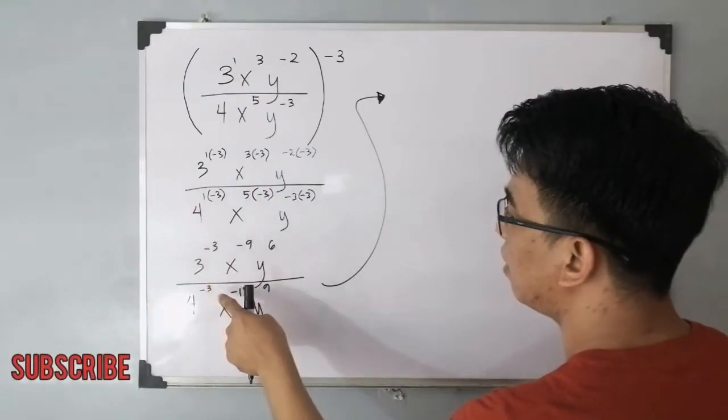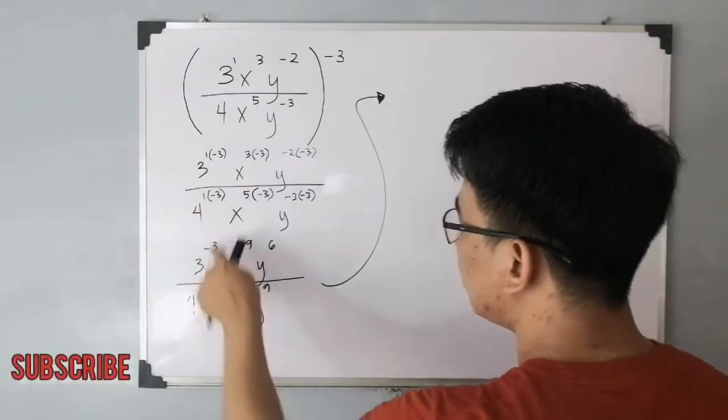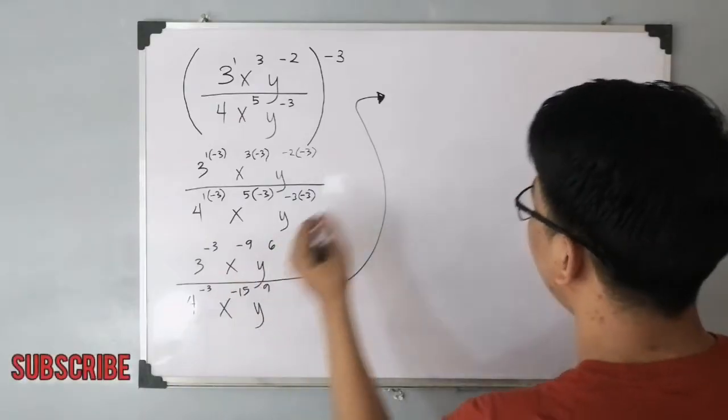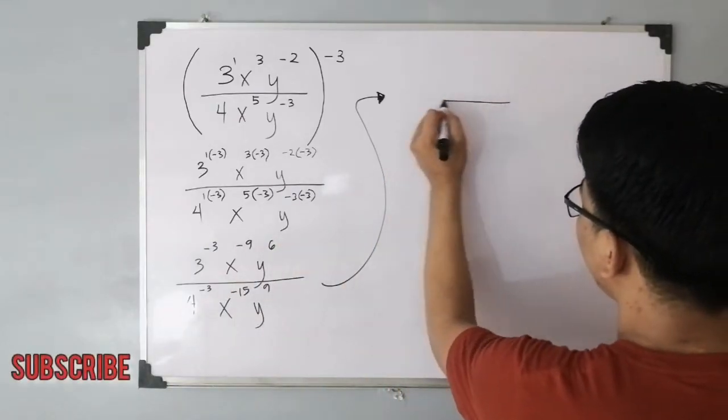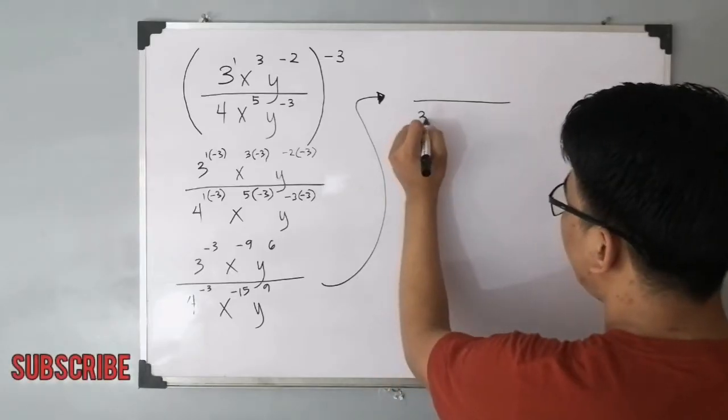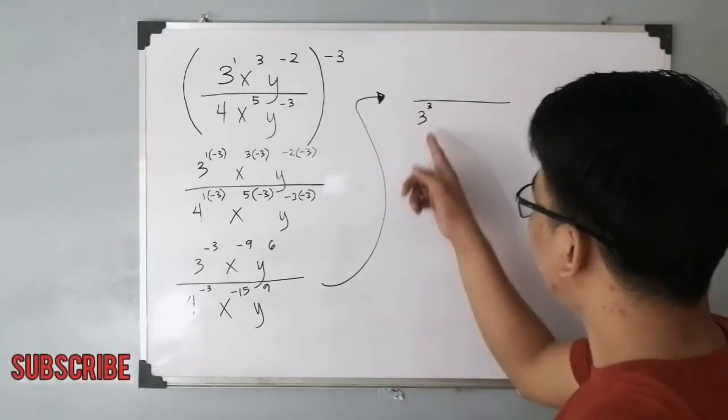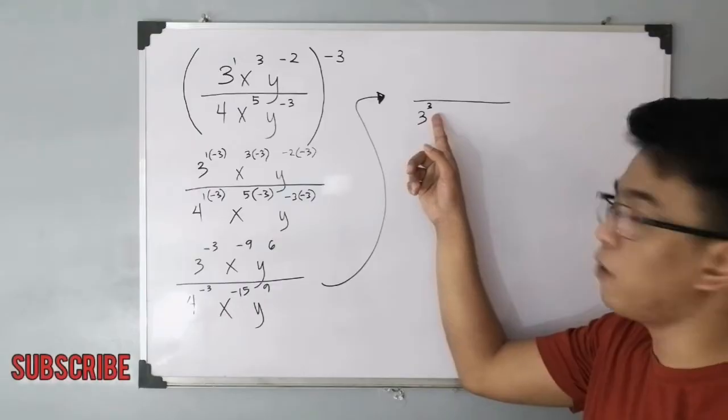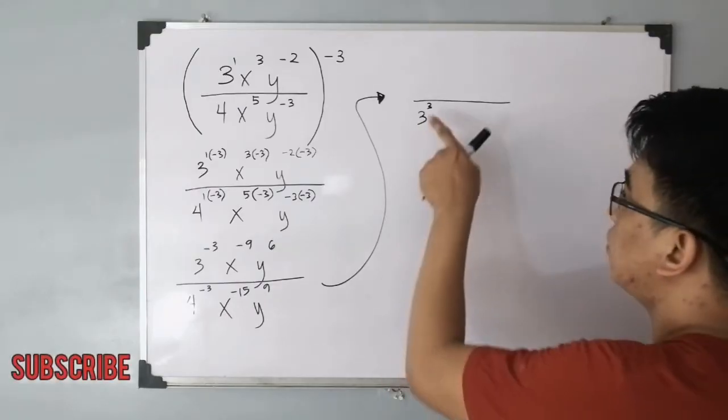Ang gagawin mo dyan, is that dadalhin mo itong 3 na ito sa denominator to make it positive. So gawa tayo dito ng ating fraction line or bar line. So laki natin dito 3 raised to 3. Ngayon, nasa baba na siya, and the exponent is positive. So isulat natin na maayos.